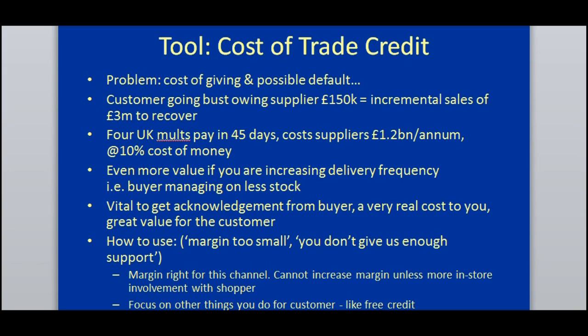As a case in point, four UK multiples in fact pay their bills on average in 45 days. This means that on average there is a sum of £12 billion outstanding, which costs suppliers £1.2 billion per annum in interest payments, given that money costs around 10% per annum.